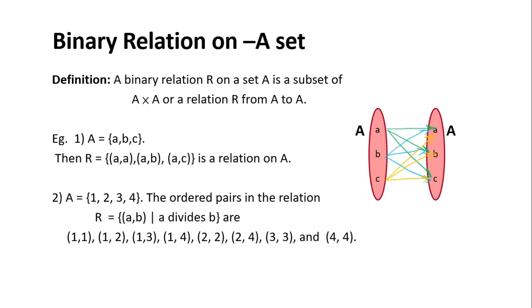A binary relation on a single set: a binary relation R on a set is a subset of A cross A, or a relation R from A to A. For example, if set A is {A, B, C}, then R can be {(A,A), (A,B), (A,C)}, which is a valid relation.